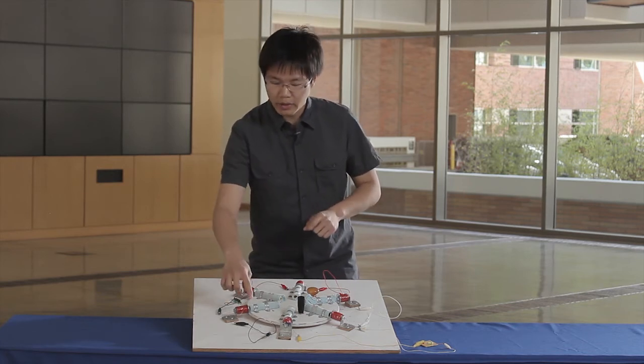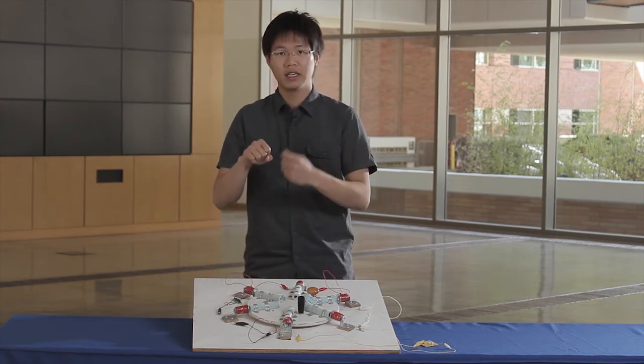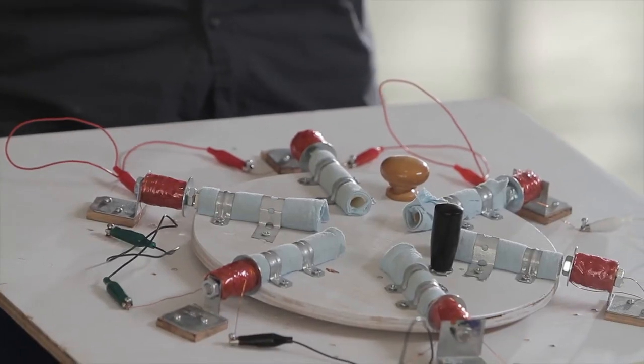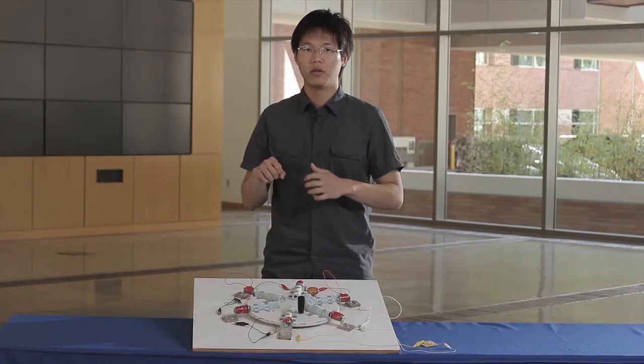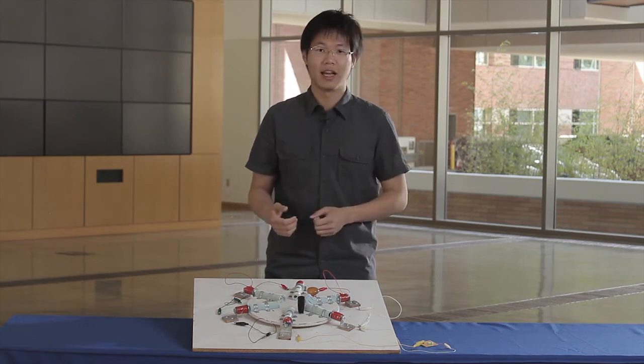So when the magnetic field is alternating in the coil, due to Faraday's law of induction, it will produce an AC current. And we are going to show this in action.